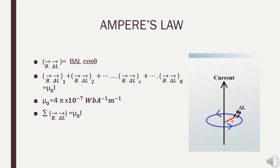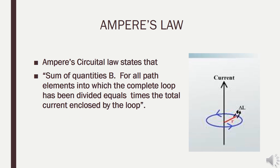So according to Ampere's Law, the sum of all B·ΔL elements into which the Amperian loop is divided is equal to μ₀ times the current enclosed by the closed path — which is the Amperian path. Summing up: Σ (i=1 to N) B·ΔL = μ₀ I. This is the statement of Ampere's Circuital Law: the sum of quantities B·ΔL for all path elements into which the complete loop has been divided equals μ₀ times the total current enclosed by the loop.